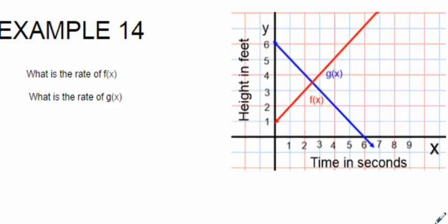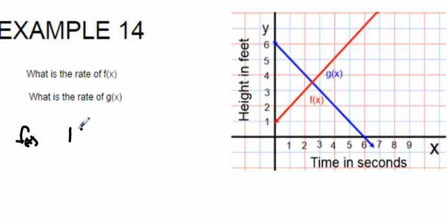What is the rate of f of x? f of x is a positive slope line, so the rate of f of x is going up one foot in one second — so it's one foot per one second.